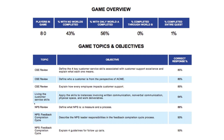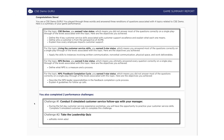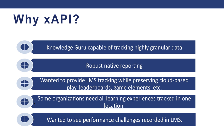You're seeing some reports that are native to Knowledge Guru — polling learning objectives, individual questions for different groups of learners, how they were performing, and also tracking performance challenges that happen outside of the game. We were pulling a lot of data and capable of tracking it. We have robust native reporting, but we wanted to be able to provide LMS tracking while preserving the cloud-based play, the leaderboards, all of the game elements — things that are just easier to have happen outside of an e-learning course.